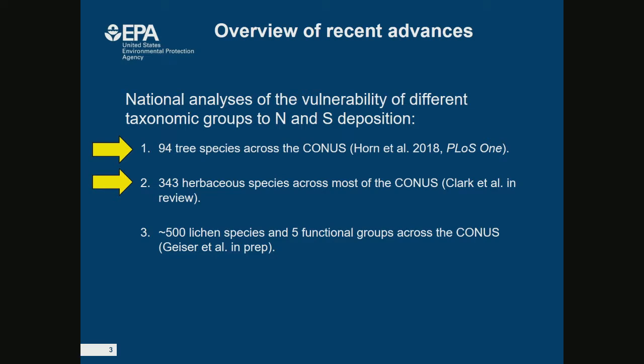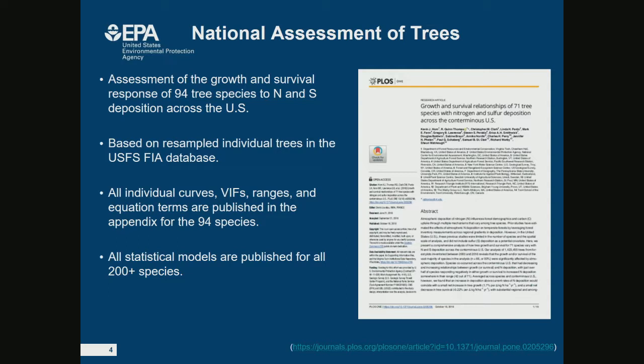There's also another study on 500 lichen species in five functional groups by Linda Geiser at the Forest Service. With these three pieces of information, this is a huge improvement in our understanding of which species are vulnerable to nitrogen and sulfur deposition and where in the country. The tree assessment is based on a massive database of about 70 to 80,000 plots in the Forest Service FIA dataset covering over a million trees nationwide. It took about five years and finally came out a few months ago.